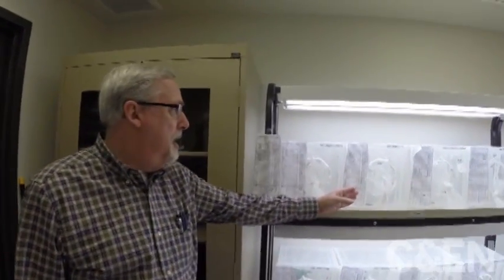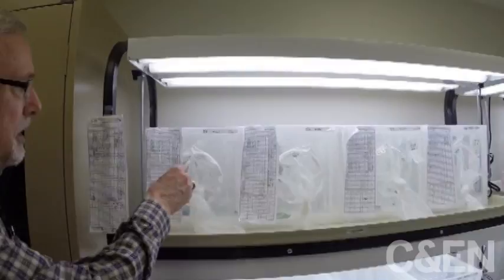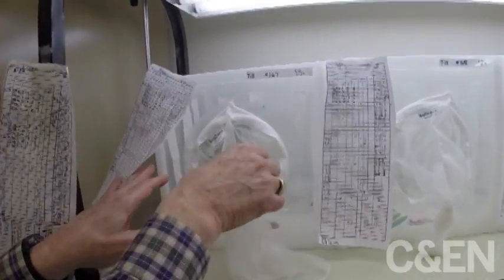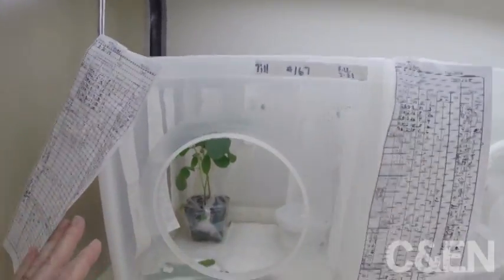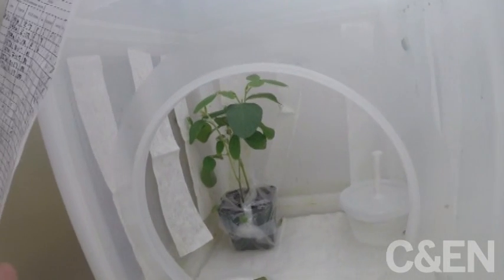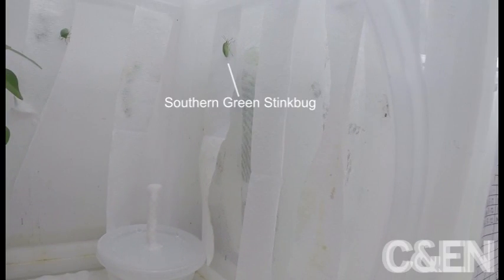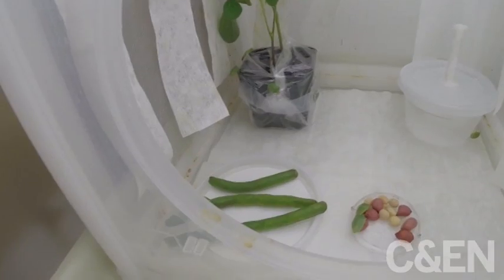In the insectary, species of bugs are housed in chambers with optimal temperatures and light to promote egg laying and growth, and no pampering is complete without special meals. The southern green stink bug, for example, dines on green beans, soybeans, and peanuts.